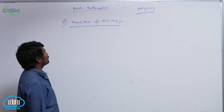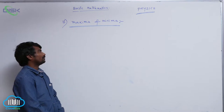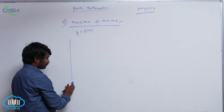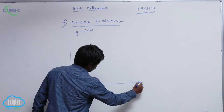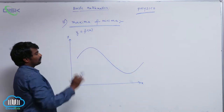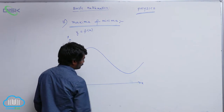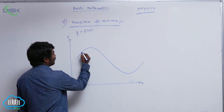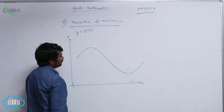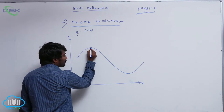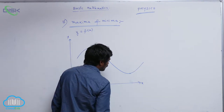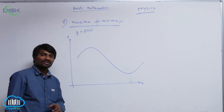The next topic in basic mathematics is maxima and minima. Let us see — y is a function of x is given. Suppose the graph is like this. As x value gradually increases, y value first increases, next decreases, next again increases. The y value gradually increases and attains maximum value at one point, again gradually decreases and attains minimum value at another point, then again increases. So, what are the conditions of maxima and minima? That is what we are going to learn here.